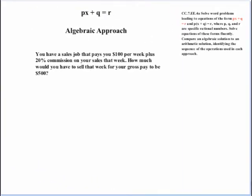Let's try a second example. Let's approach this algebraically. And this one is in the form PX plus Q equals R. The problem reads: you have a sales job that pays you $100 per week plus 20% commission on your sales that week. How much would you have to sell that week for your gross pay to be $500? Well, first we have to use some logic and set up the situation, the relationships. In this case, the money that you get in commissions plus the $100 that you get regardless would be your weekly pay. Setting this up algebraically, my commission is 20%, so it would be .20S being the value of what I sold that week plus $100 equals P for the weekly pay. Now, I do have some additional information. I do know that the pay that I want for that week is $500.